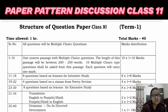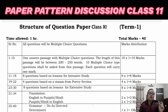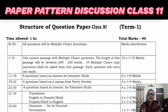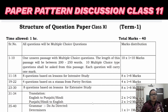Next, there will be eight questions based on lessons for intensive study — questions 11 to 18. The intensive study lessons are: Gender Bias, Portrait of a Lady, Liberty and Discipline, and President Speaks. So across these four chapters, you will have eight questions — two questions from each chapter.